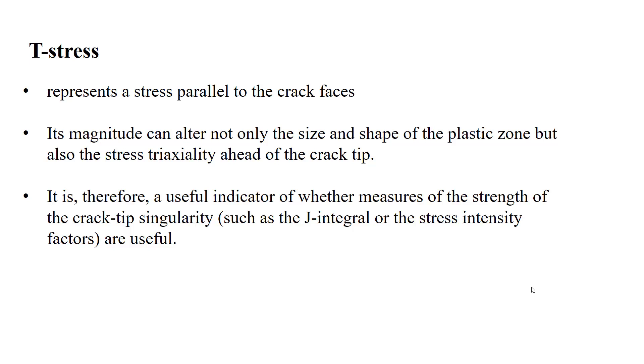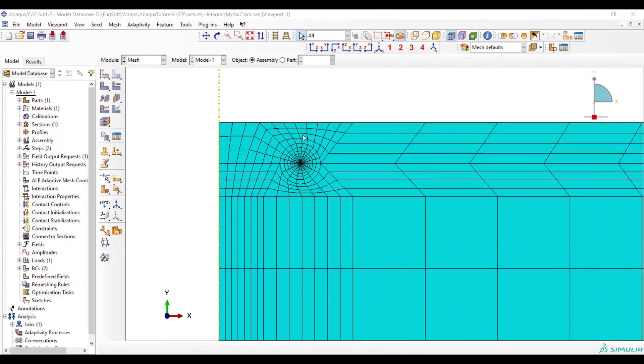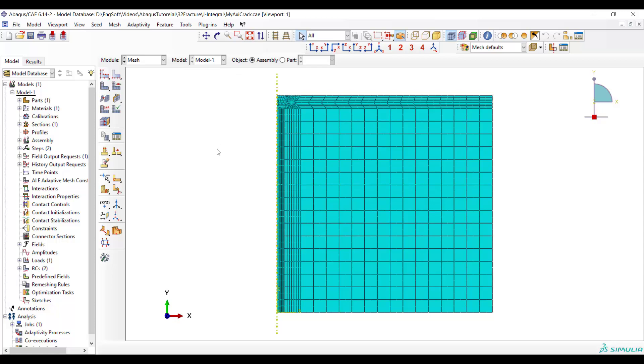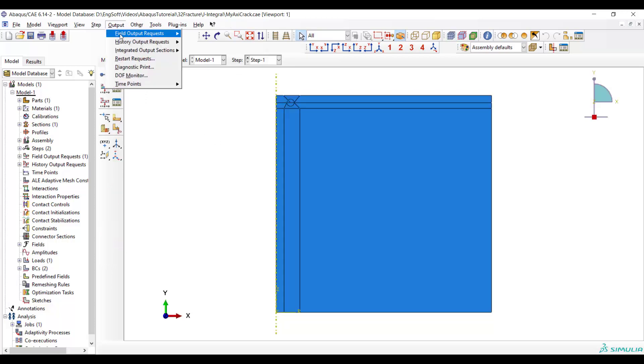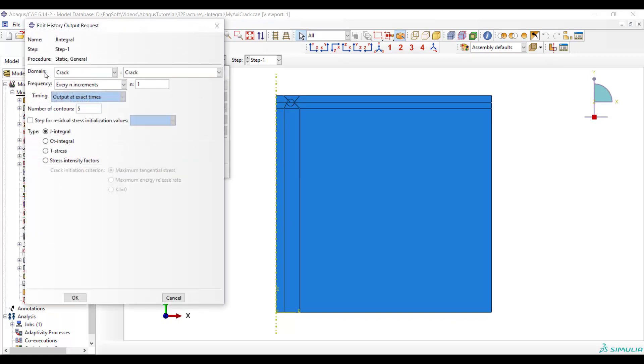In our previous video we have explained how we can create a special mesh around crack tip and also how to control mesh in remaining regions of the part. Now we request all the contour integrals in this video. We have requested J-integral in our previous video by five contours.